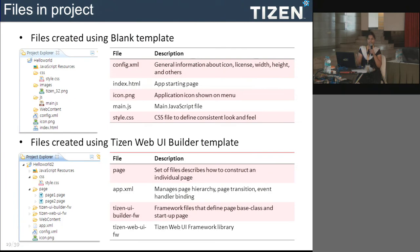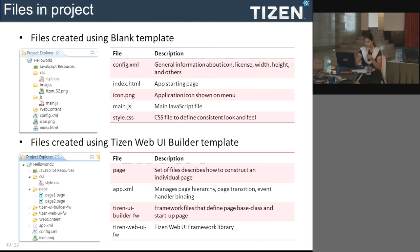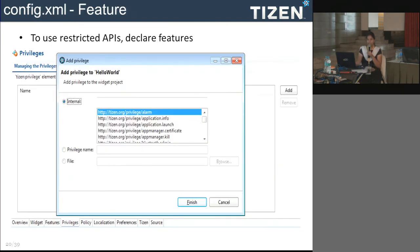These are the files generated when you select a simple project, and these are the files generated when you select the UI framework-based template. One important thing is that installation and update happen based on the config file, and this config file has many things users can customize.